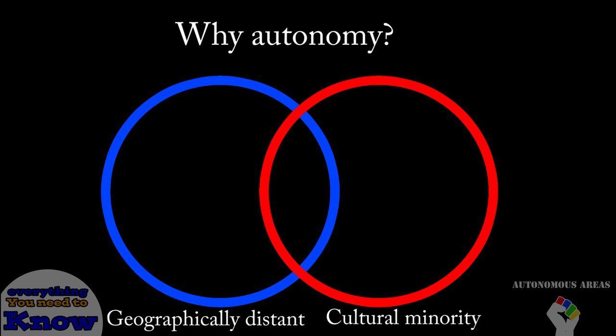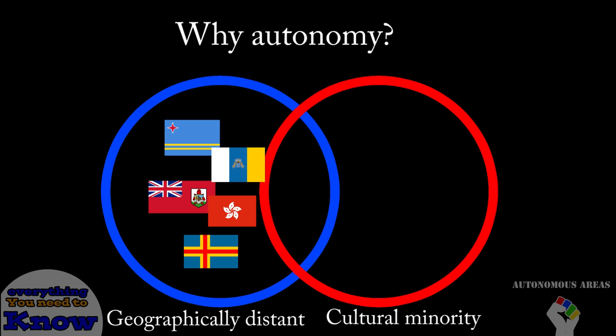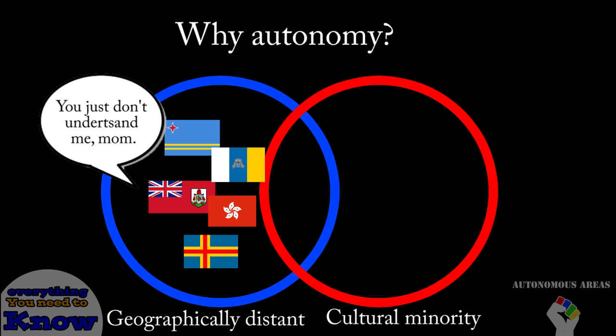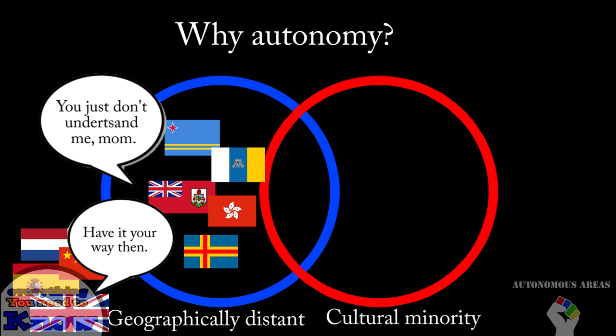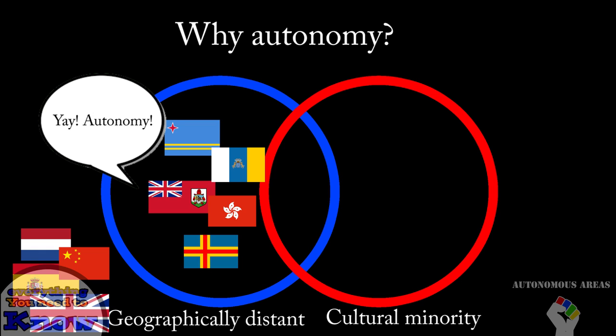Autonomous areas exist to appease the citizens that live in said region. If the autonomous area is far from their overlord, naturally they will want to be able to govern themselves to a certain degree. Not only will the centralized government not be able to understand the issues that are happening on the far away territory, but chances are they won't have the time to bring them up in parliament. So for that reason, a decentralized local government is important to appease the populace and properly govern these overseas territories.